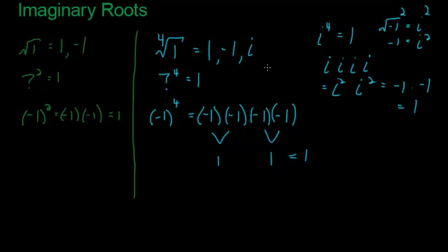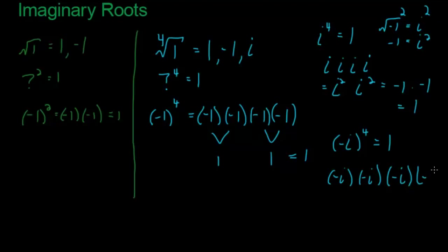Negative i to the fourth also equals one. Negative i times negative i times negative i times negative i: the first two negatives cancel, giving i times i, and the second two negatives cancel, also giving i times i. That's i to the fourth, which we already established equals one. So negative i is also a solution to the fourth root of one.